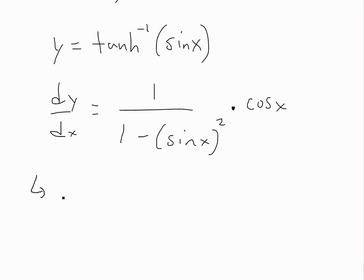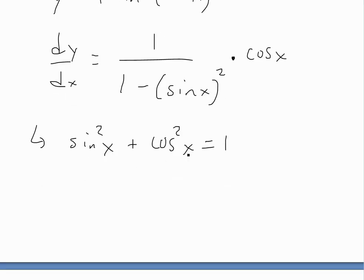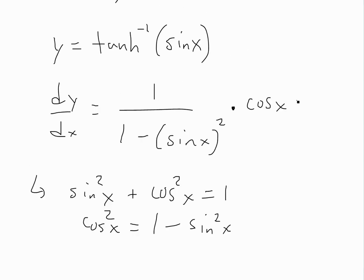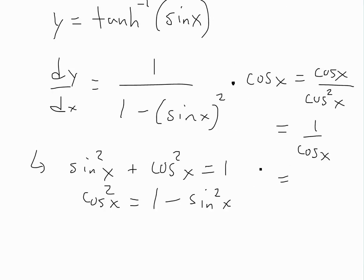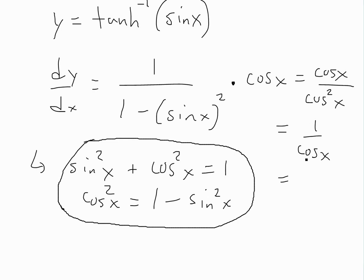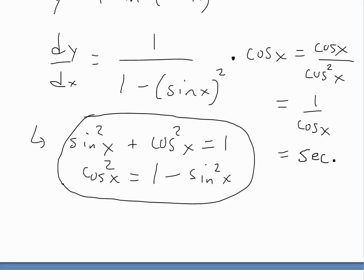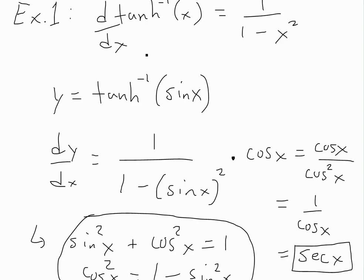We can simplify this further. Recall the trig identity sine squared plus cos squared equals 1. Solving for 1 minus sine squared, we get cos squared x equals 1 minus sine squared x. Plugging that in, we get cosine x over cosine squared x. The cosines cancel, leaving us with 1 over cos x. By definition, that equals secant of x. So the derivative of question 1 is secant of x.